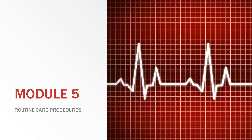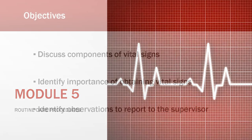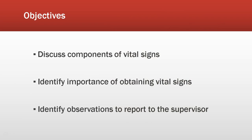Now we will go more in-depth in your CNA education. Welcome to Module 5, Routine Care Procedures. We will be looking at the different types of vital signs and talking about how to accurately collect data. Objectives are to discuss components of vital signs, identify the importance of obtaining vital signs, and identify observations to report to the supervisor or nurse.